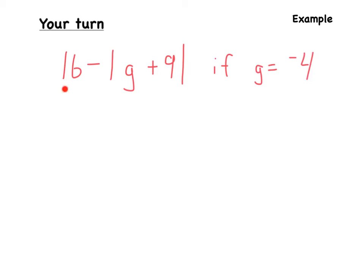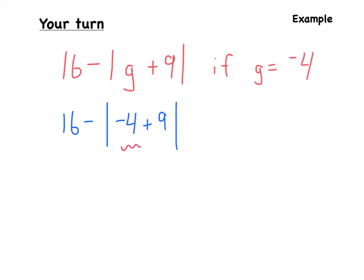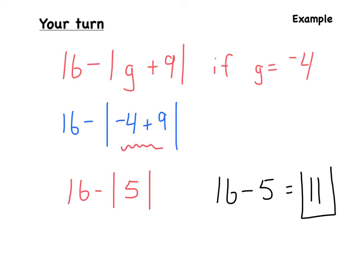We have 16 minus the absolute value of g plus 9, if g is equal to negative 4. We plug in negative 4 wherever we see g, giving us 16 minus the absolute value of negative 4 plus 9. Solving inside the absolute value: negative 4 plus 9 equals positive 5. Absolute values are always positive, so we have 16 minus 5, which equals 11 — our final answer.